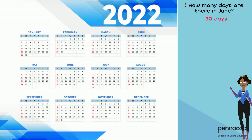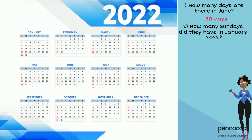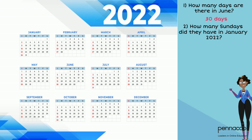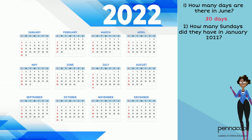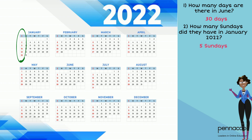Question number two: how many Sundays were there in January 2022? First, make sure that the calendar you're looking at is 2022. Then find January on the calendar and count the number of dates that fall on Sunday. There are five numbers on Sunday. Therefore, there are five Sundays in January 2022.